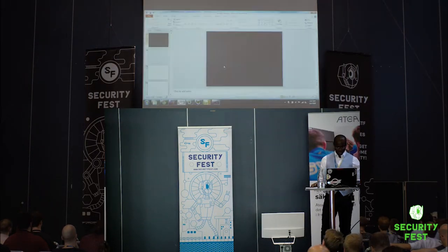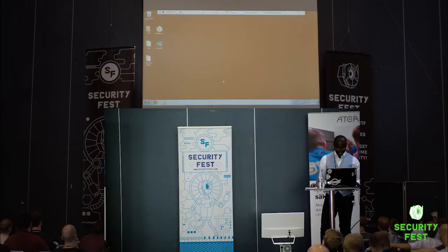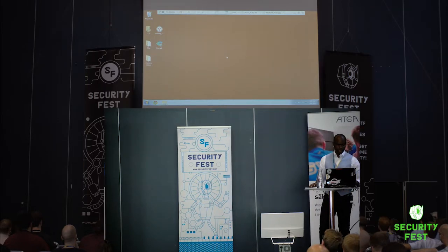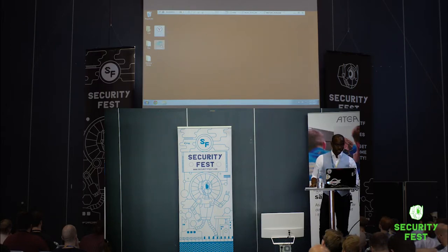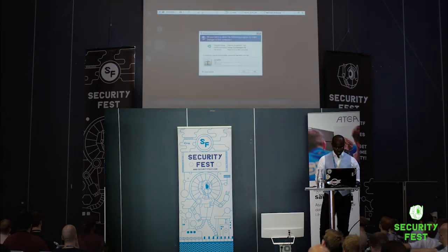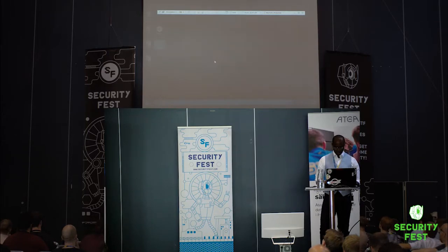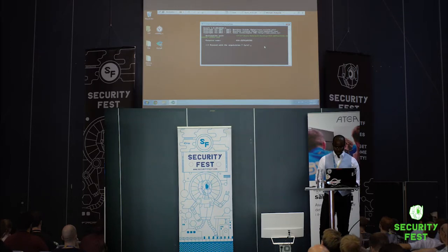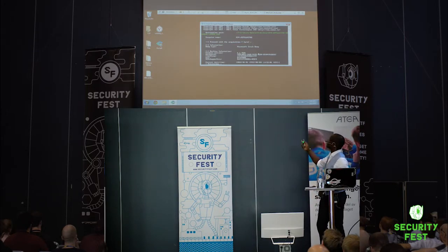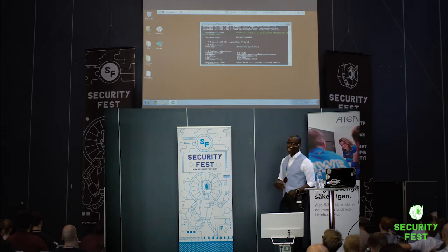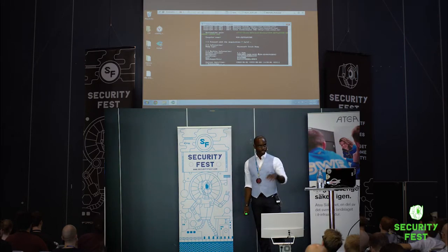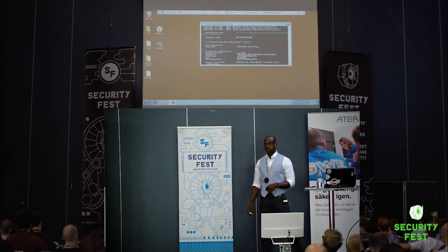Let's do a demo. Here we are on a Windows 7 machine with DumpIt, and we'll use Volatility for analysis. To start dumping, you can run it from the command prompt or double click and enter the administrator password. This might take some time, but that's all there is to it — we're dumping the entire memory to a single dump file which we can then analyze, send off to another machine, or pass to other people for analysis.